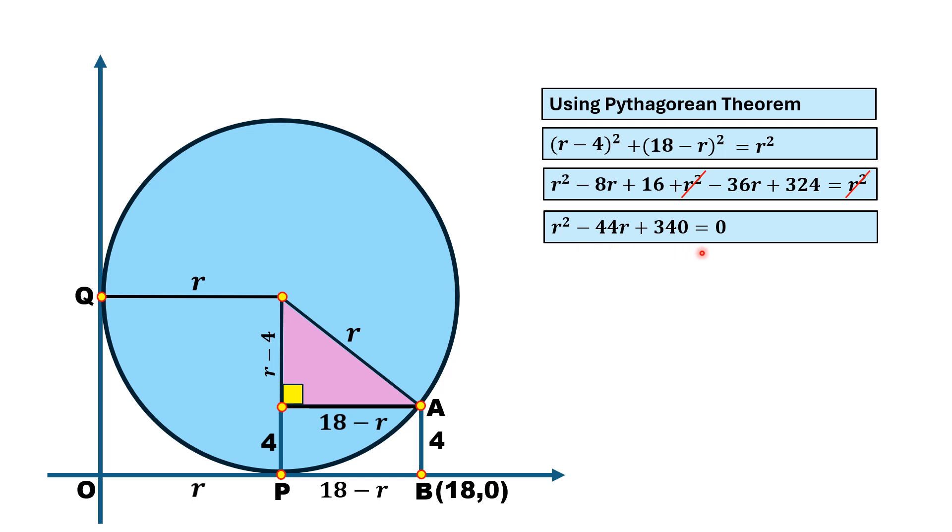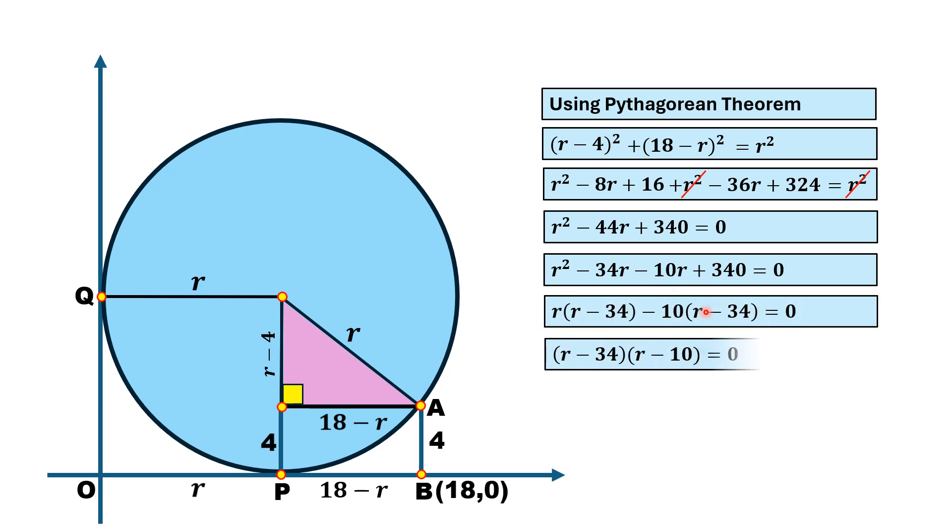Factorizing this quadratic equation in r by breaking the middle term as minus 10 and minus 34, we get (r - 10)(r - 34) = 0. From here, we have the values of r as 10 and 34.